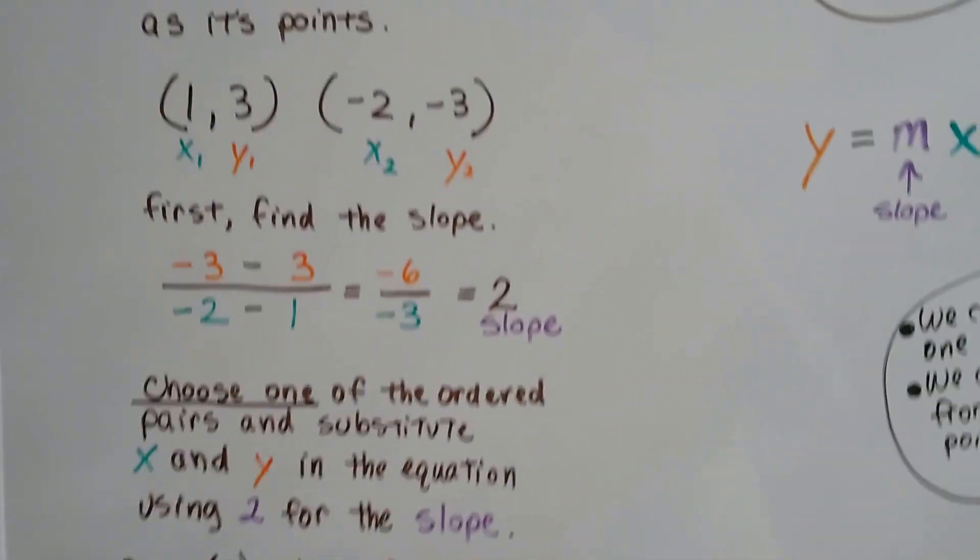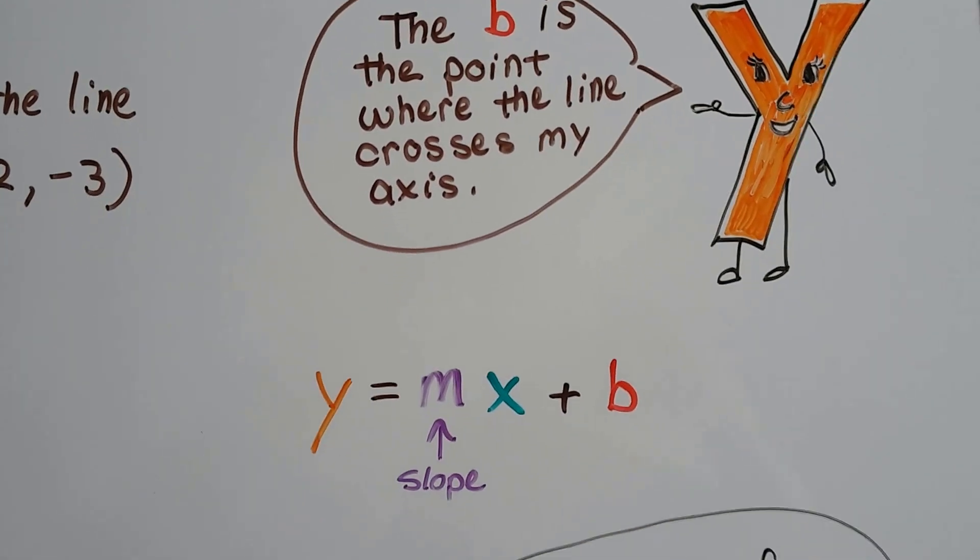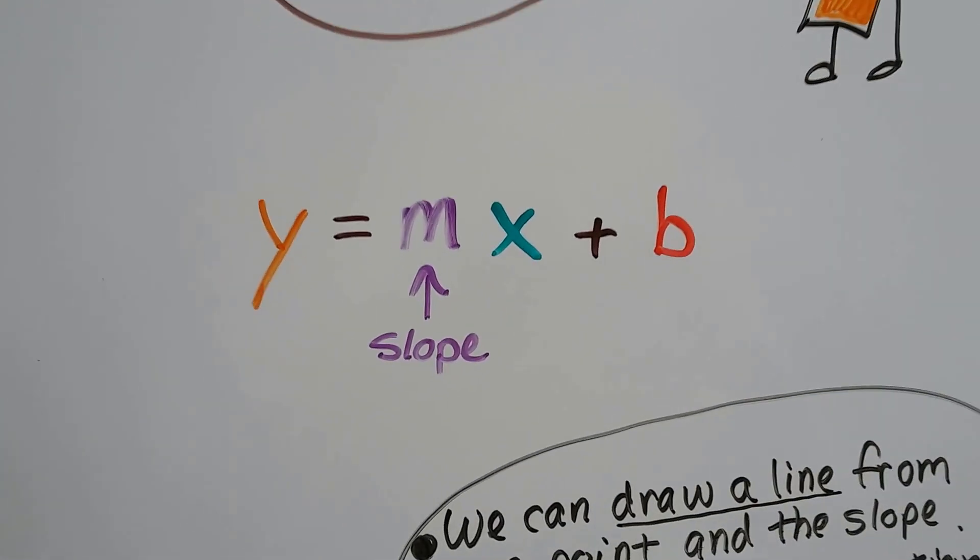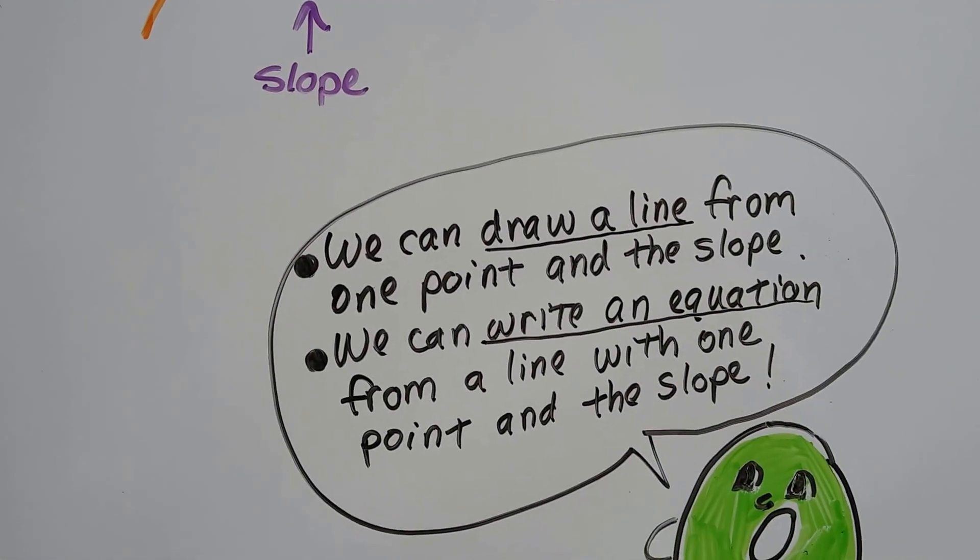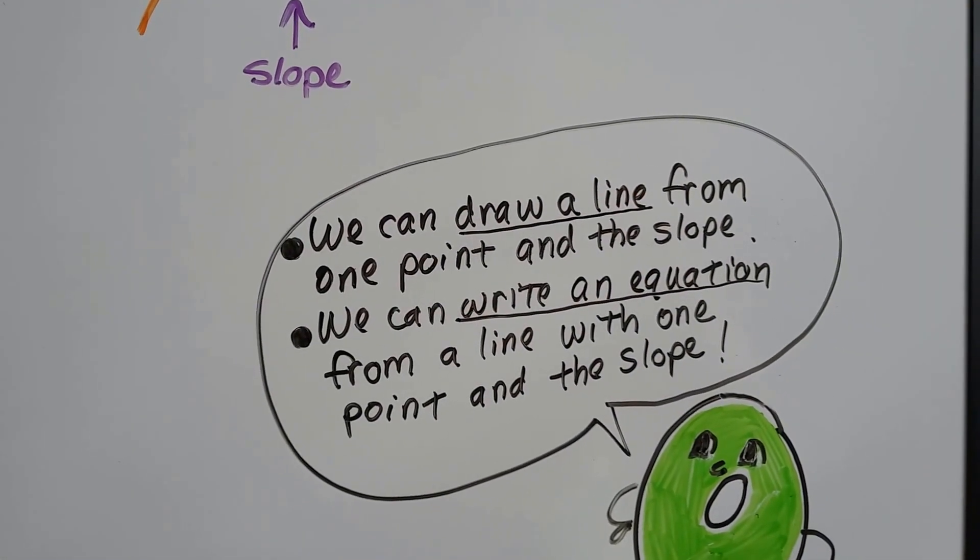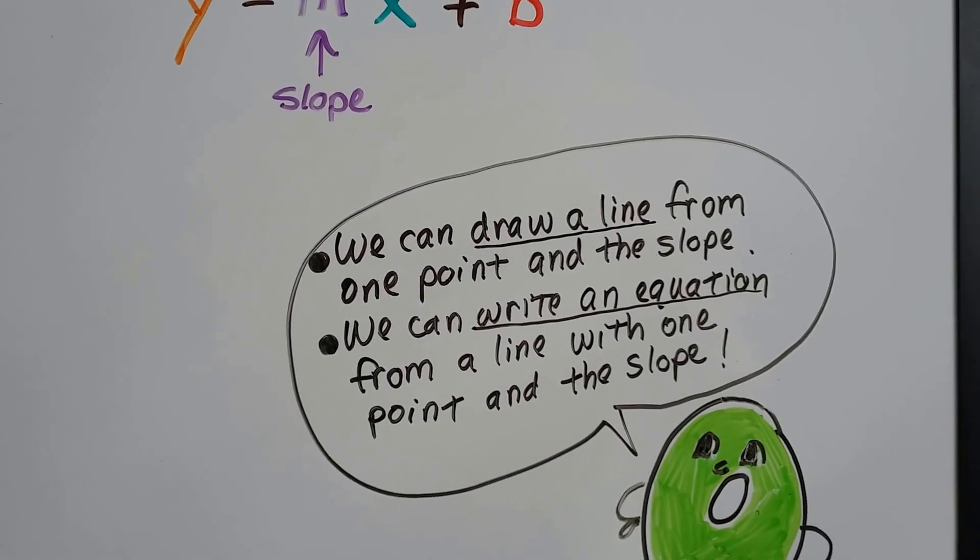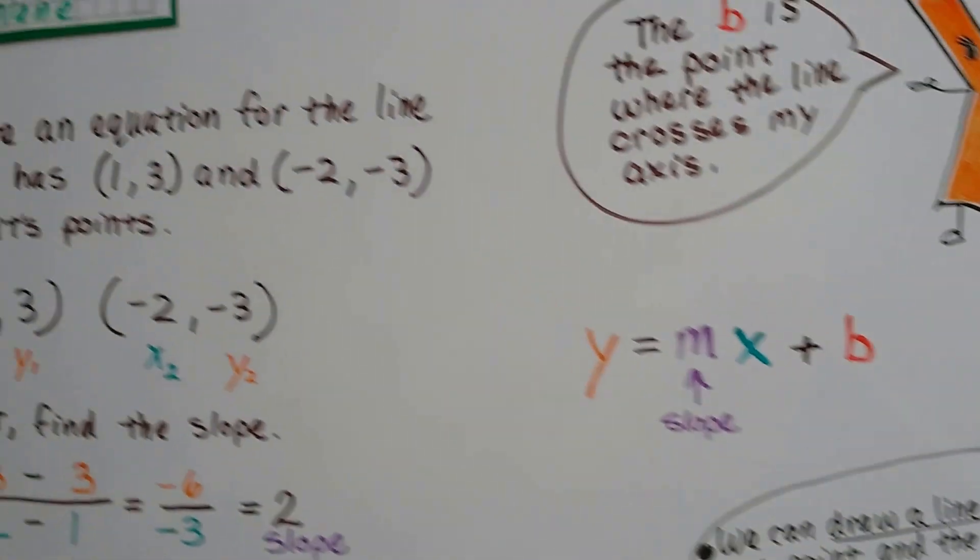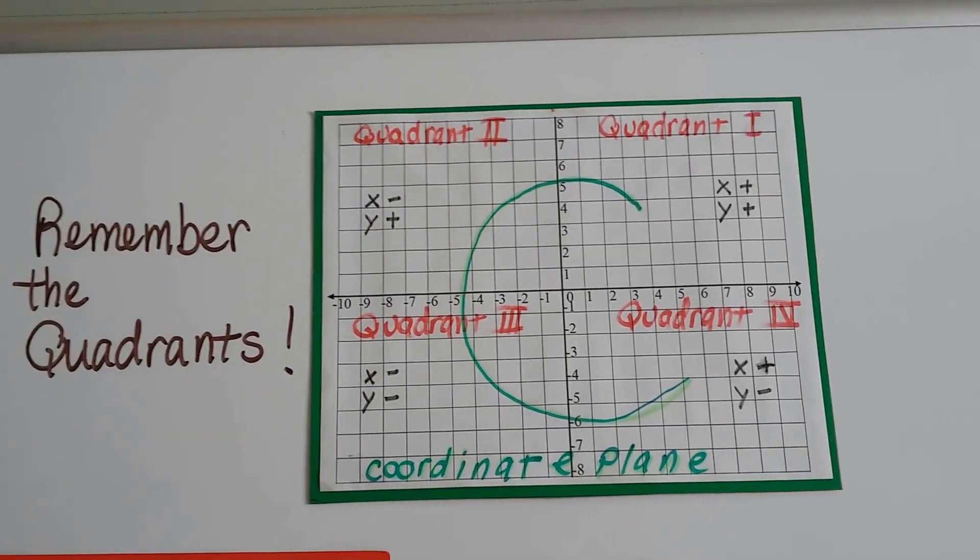So remember that the b is the point where the line crosses the y-axis. And this is slope-intercept form. And the m is the slope. And we can draw a line from one point and the slope. We can also write an equation from a line with one point and the slope.